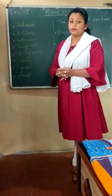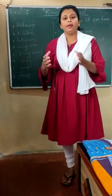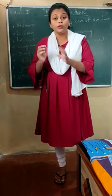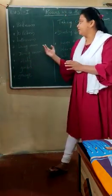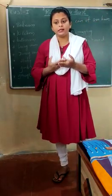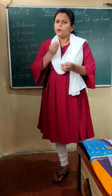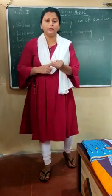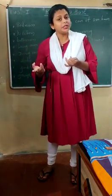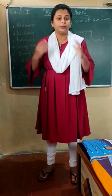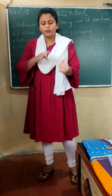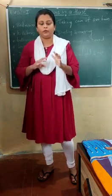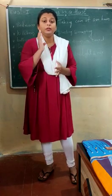Next is the kitchen. Attached to the kitchen there is a store room where we keep all grocery and eating items. In the kitchen we have utensils, vessels, a stove, and a cylinder where we cook food. In our house mother, sister, grandmother, and sometimes father, grandfather, or elder brothers cook the food.